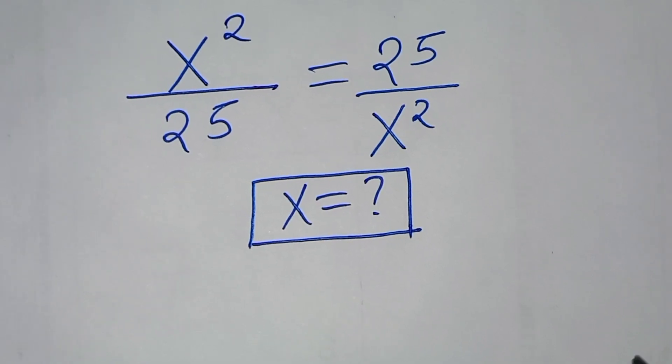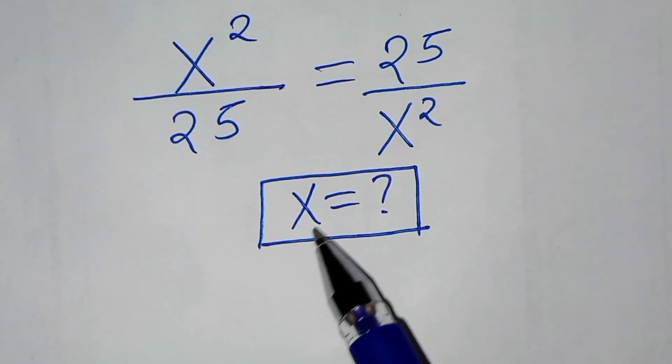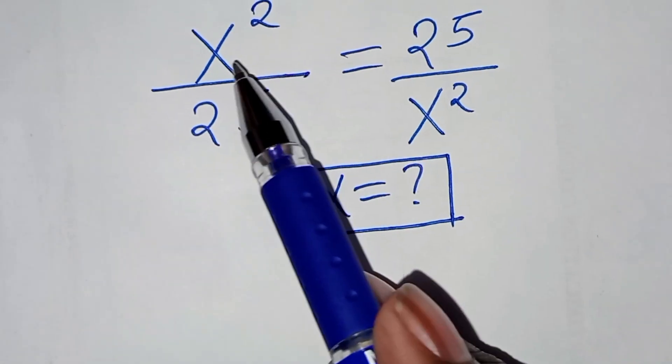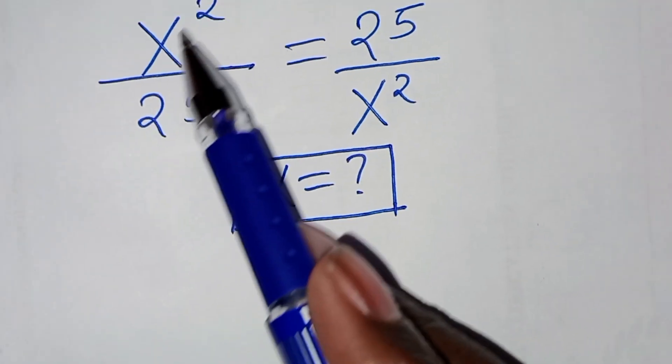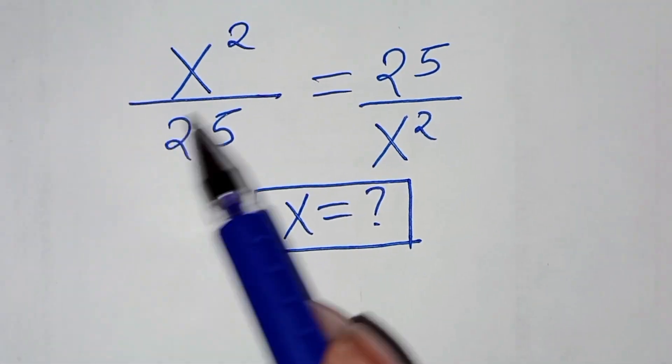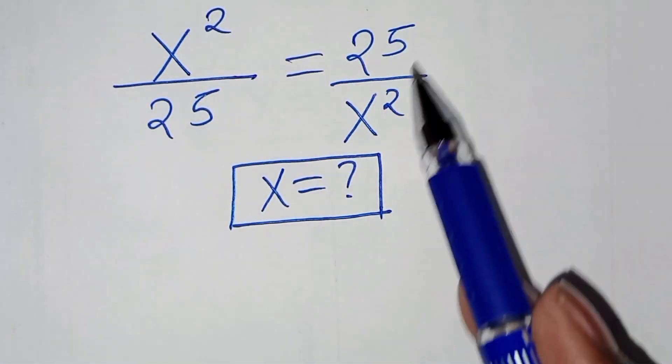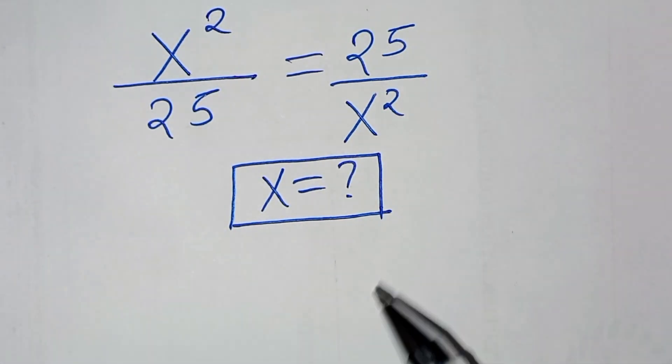You are welcome to solve for the value of x given this exponential equation, which is x squared over 25, equal to 25 over x squared.